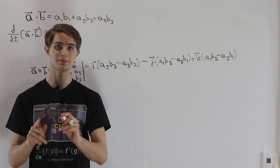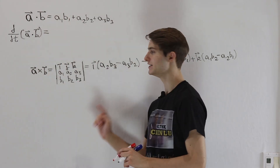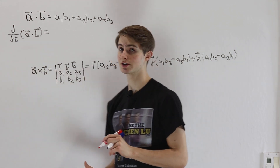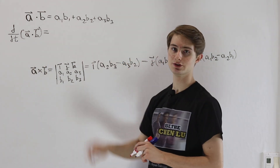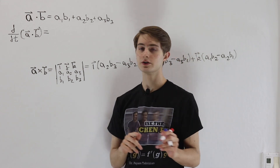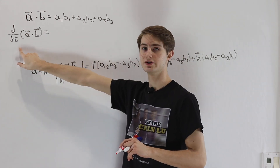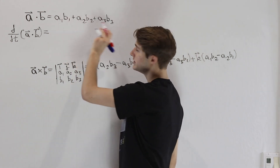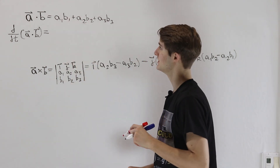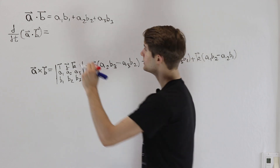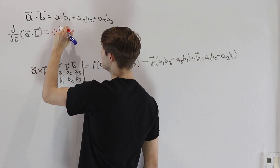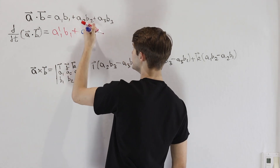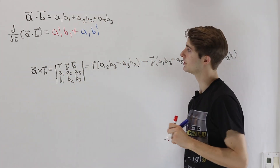So now we want to see how that plays out when we differentiate each of these products. Remember, if we're taking the derivative of this product, we're assuming that the components A1, B1, A2, B2, and so on are all going to be functions of some other variable t. So when we do this derivative, we can just take the derivative of each of these products with respect to t. The derivative of A1B1 is going to be A1' B1 plus A1 B1'. That's just the product rule.